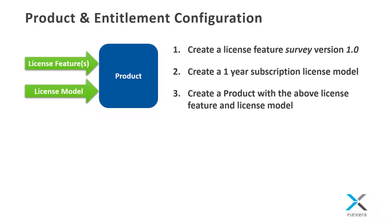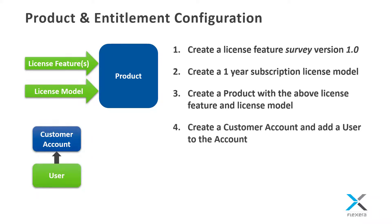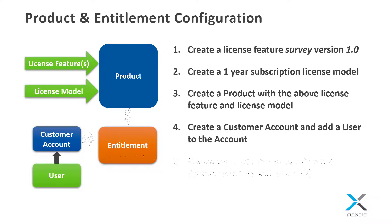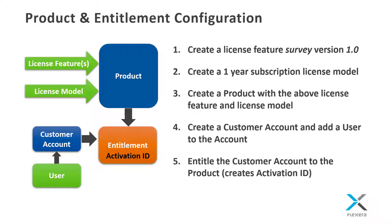We'll then create a product using the newly created license feature and license model. We now need to entitle a customer account to the product. First, we'll create a customer account and add a user to the account. The last step will be to create an entitlement for the new customer account for the new product. FlexNet Operations will create a unique activation ID for the entitlement line, which will be used to obtain licenses. I will now log into the producer portal and follow these steps.